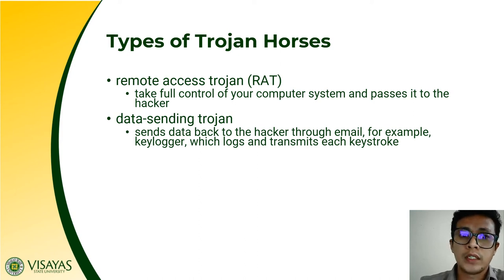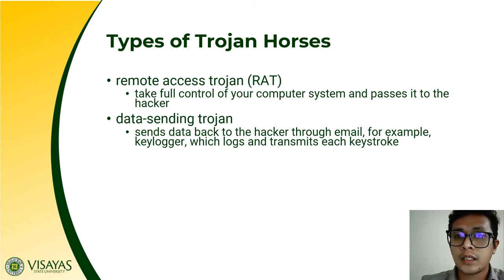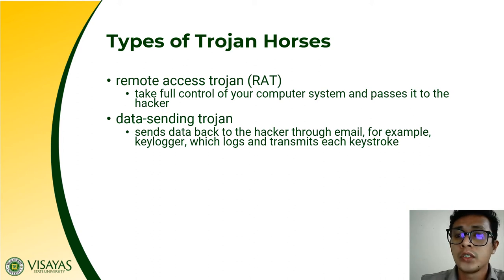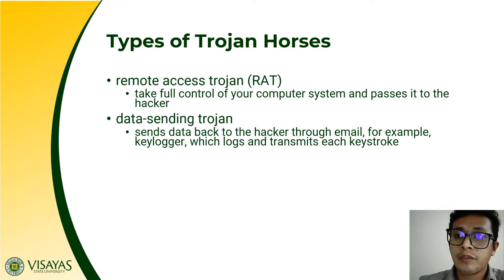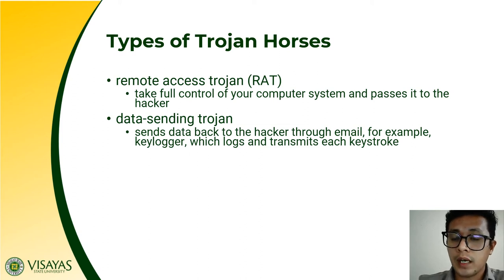Another type of Trojan is the Data Sending Trojan. It is called data sending because it sends data back to the attacker through email. For example, a keylogger logs and transmits each keystroke. Therefore, every time you press a key from your keyboard, it is being logged and transmitted back to the hacker. That's what we call a Data Sending Trojan — to keep logs of your keystrokes or log your data.